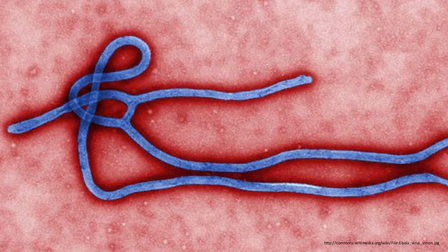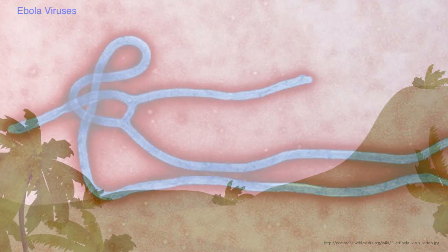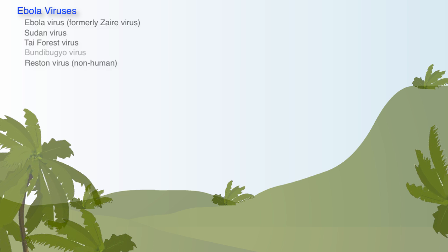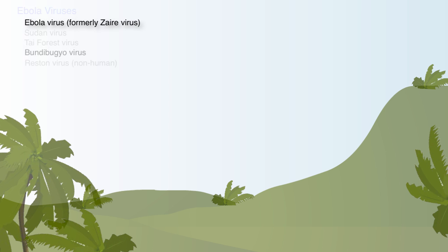The Ebola outbreak in Africa has held the attention of world officials for months, but what is Ebola and why are so many worried? Ebola virus disease, or Ebola hemorrhagic fever, is caused by a family of viruses, of which the most well-known was once called the Zaire virus — now it is simply known as the Ebola virus.